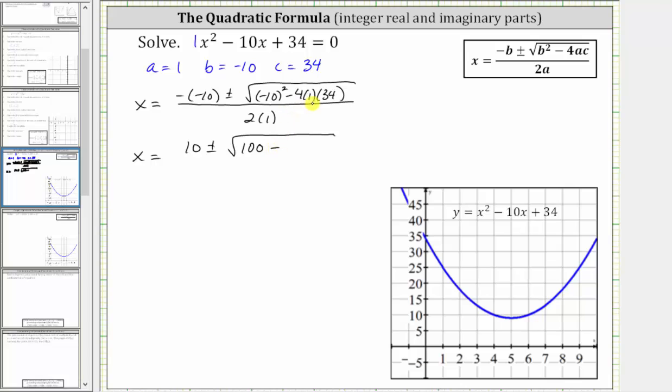And then we have minus four times one times 34 is 136. And this is all divided by two times one, which is two.